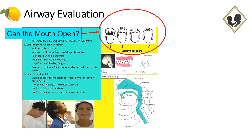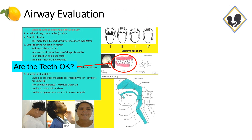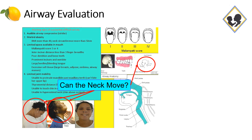First, look if the mouth can open — this refers to the Mallampati score. Second, look if the teeth are okay; specifically look for the presence of an overbite, which can be an indication of a small lower jaw. Third, can the neck move? The Dylilken warning sign applies here: if the patient is unable to lift her chin during extension of the neck above the level of the occiput, this is a danger sign.